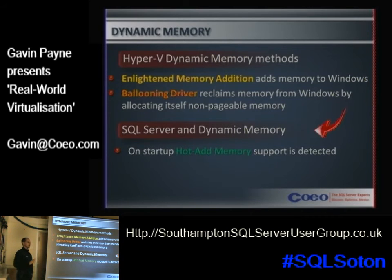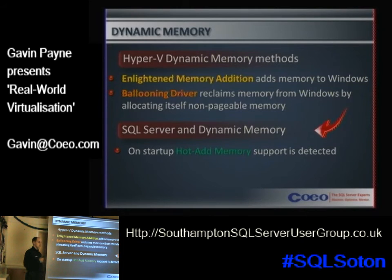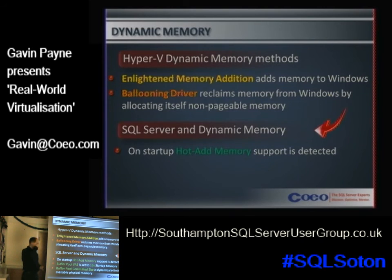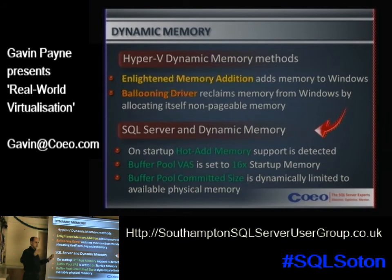In the 64-bit world you can't enable hot-add memory support manually — it's only an auto-detect and enable feature. SQL Server 2012 is a major change: it now supports this feature in Standard Edition, whereas before it was exclusively Enterprise Edition. When SQL Server starts with hot-add memory support detected, it gives itself a virtual address space 16 times the amount of memory it has on startup, so that memory address space is already reserved and available as memory becomes available.